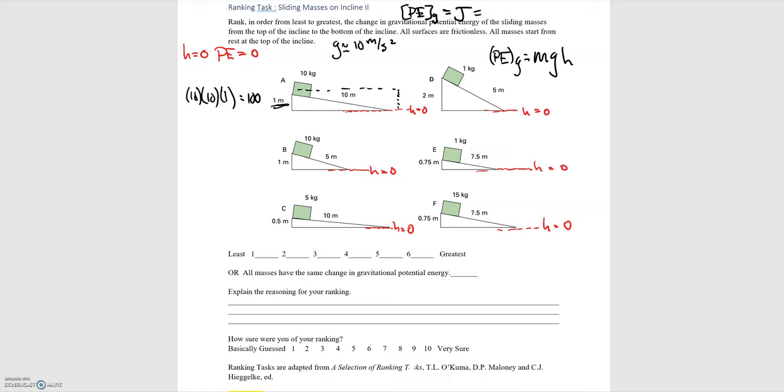A joule must be equal to a kilogram times meters squared all over seconds squared, just going off of what these base units are, where mass is a kilogram, the acceleration due to gravity is meters per second squared, and then height is in meters, giving us kilogram meter squared per second squared.